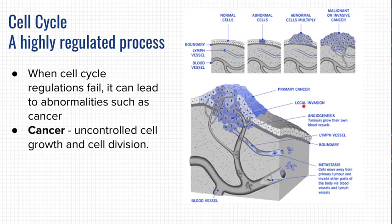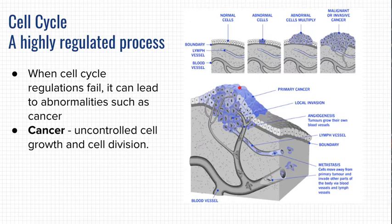Another target of cancer drugs is rapidly dividing cells. These cells that are dividing too quickly and abnormally — if we can kill rapidly dividing cells, we might be able to kill those cancer cells. That's a reason why people undergoing chemotherapy often lose their hair, because those hair follicle cells are also dividing quickly. The drugs don't distinguish between hair follicles and cancer cells — they're just wiping out anything that's dividing quickly.